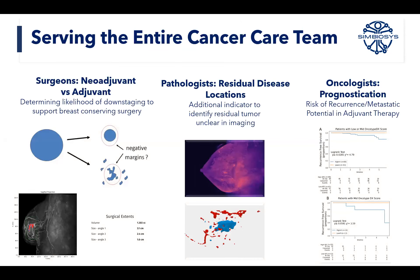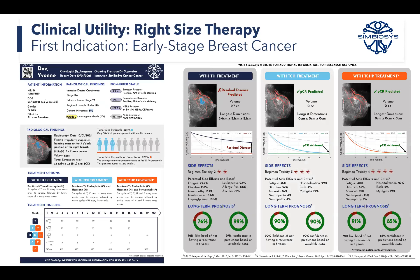The first indication we're getting approval for is early-stage breast cancer in the neoadjuvant setting. This is an example of the report we're generating that compiles the patient's data — pathology, imaging, and the treatment options that may be available to that patient. This is another example in the HER2-positive setting.